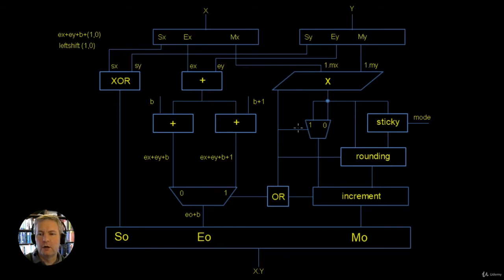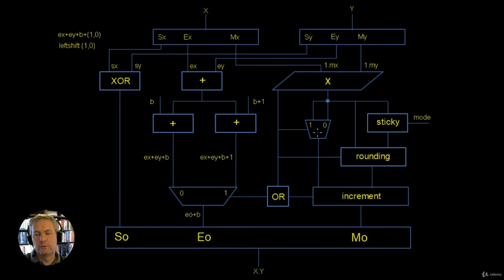That output — this point here — is the actual 23-bit output of the mantissa, starting at the right point: either at the original decimal point position, or with the decimal point shifted one place to the left.